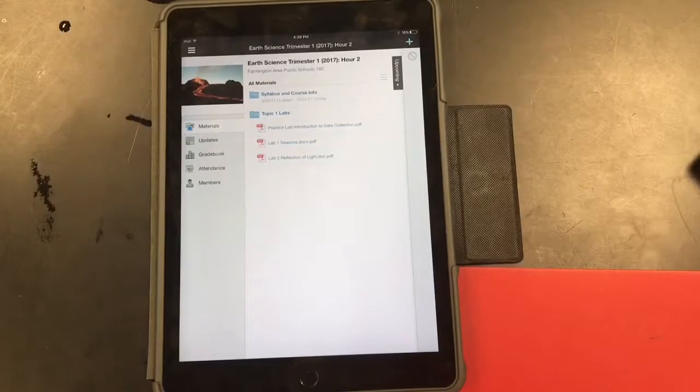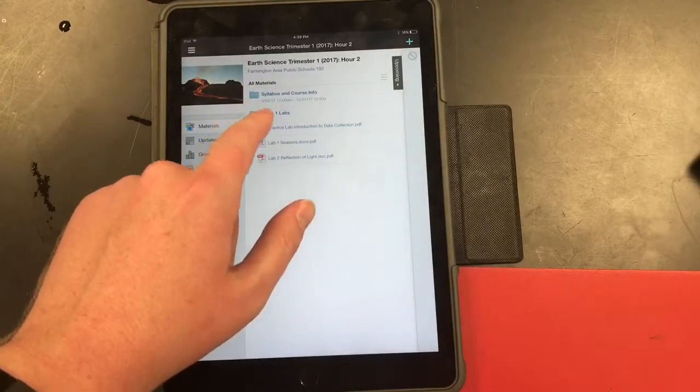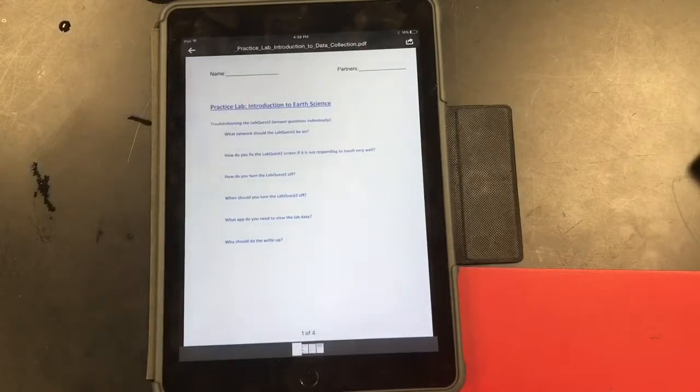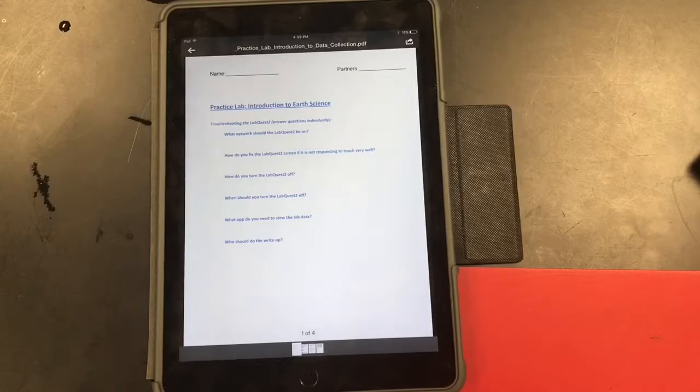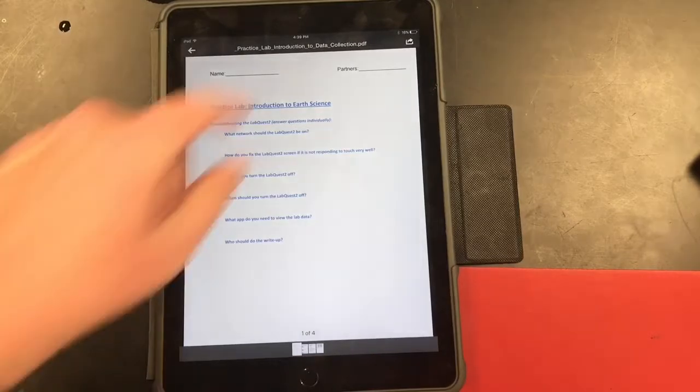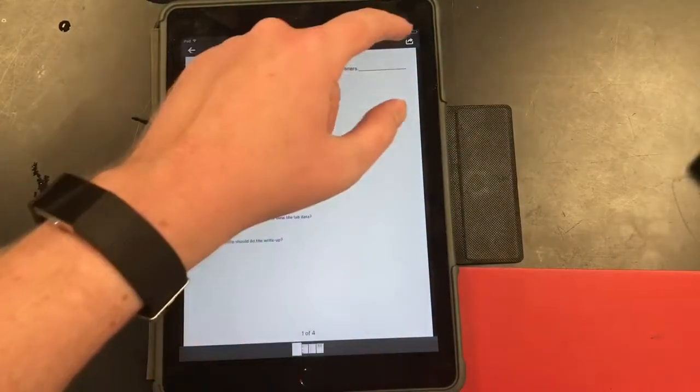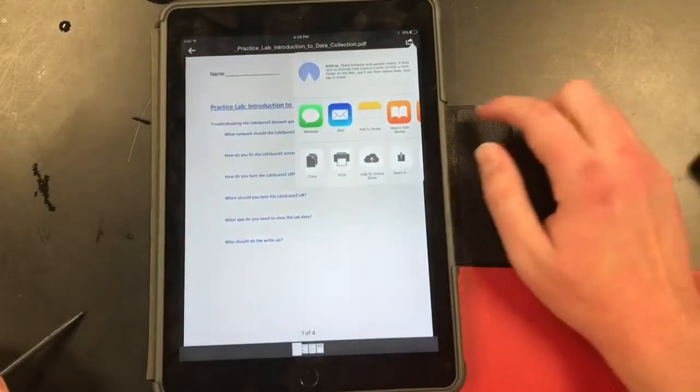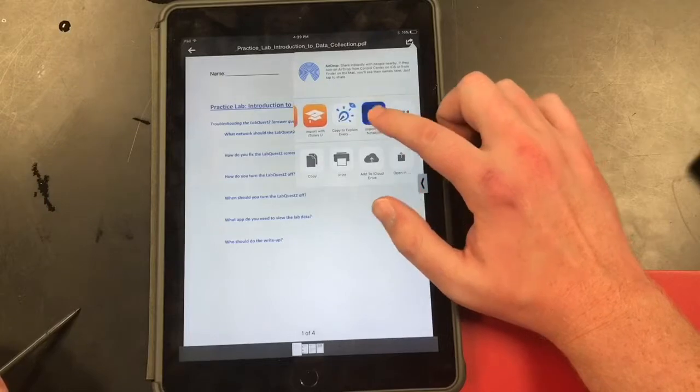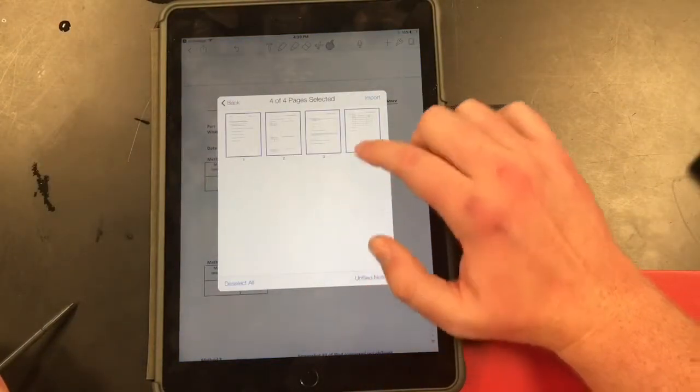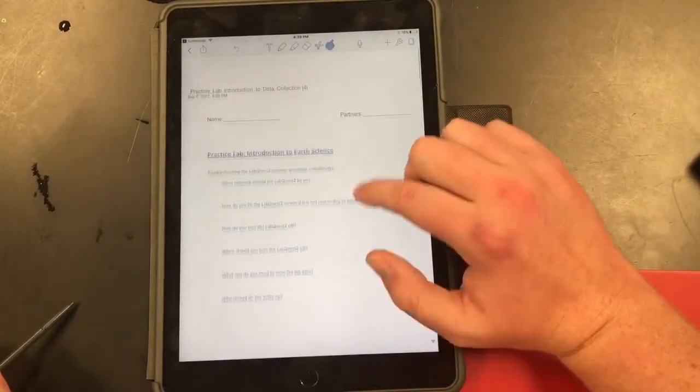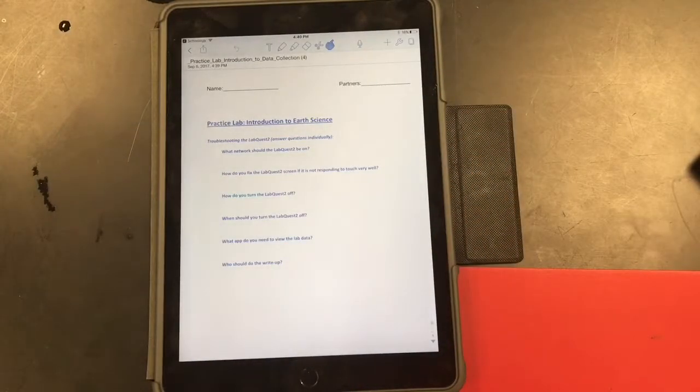The first thing that I want you to do is to go into Schoology, go into our earth science Schoology page, and under Topic 1 Labs, there should be a folder for Topic 1 Labs. Let's go to our Practice Lab Introduction. So this is just a raw PDF of our lab worksheet. This is what we're going to fill out and turn in to complete the lab. The first thing to do, because you can't write on it like this, is to go to your upload and we're going to upload this to Notability. Once you get it into Notability, we're going to be ready to do the main setup for this lab.